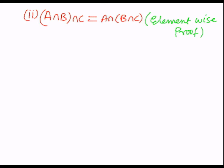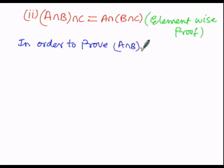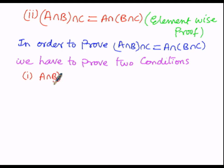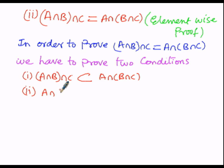First of all, we have to prove two conditions. In the first condition we have to prove LHS is a subset of RHS, and in the second case we have to prove RHS is a subset of LHS. So, condition one: A intersection B intersection C must be a subset of A intersection of B intersection C, and condition two: A intersection of B intersection C must be a subset of A intersection B intersection C.